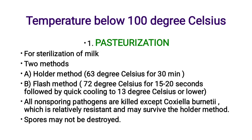Temperature below 100°C includes pasteurization. Pasteurization is mainly used for sterilizing milk products. It contains two methods. First, the holder method: temperature of 63°C for 30 minutes. Second, the flash method: 72°C for 15–20 seconds, followed by quick cooling to 13°C or lower.